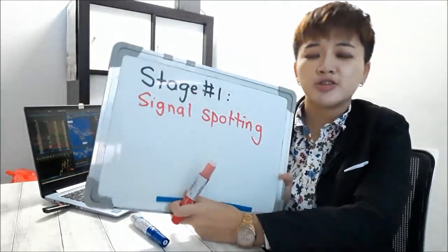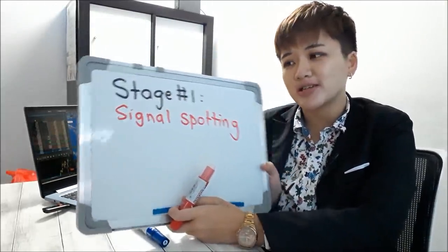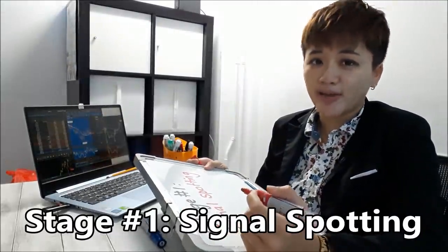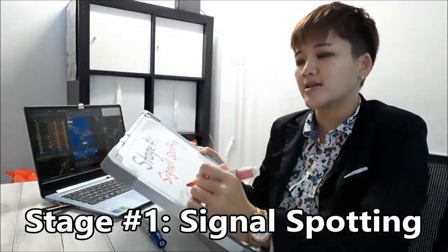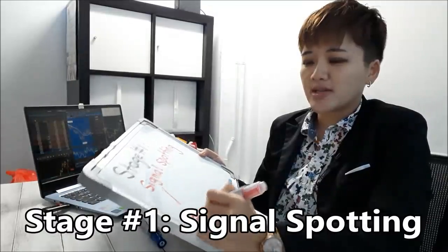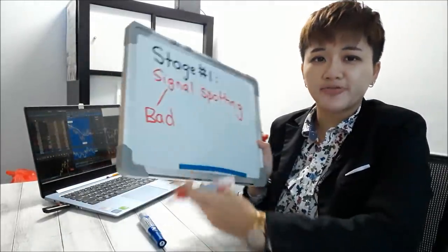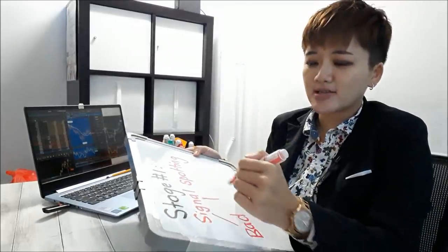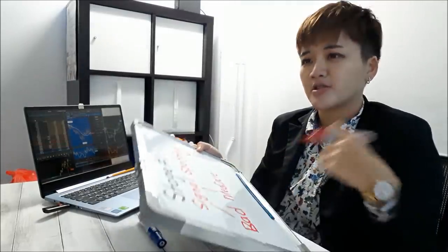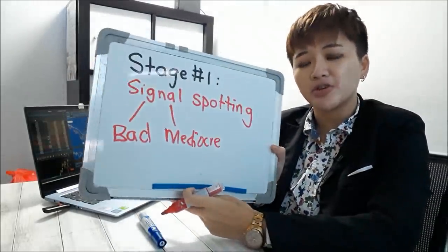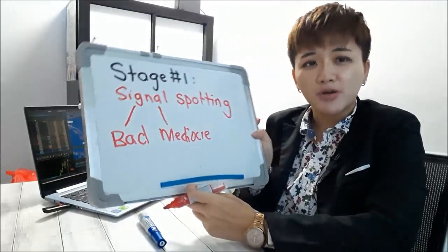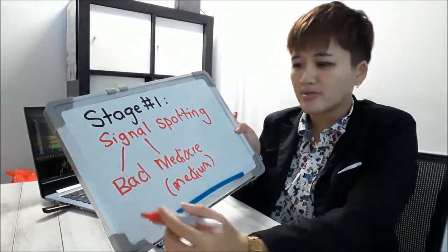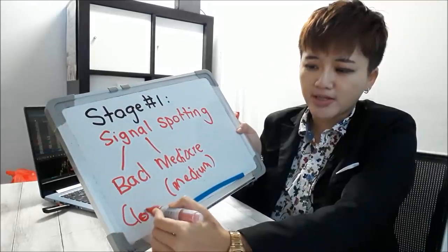So the first stage — you gotta learn how to properly spot signals. It doesn't mean that if you see a trade, it is time to trade. There are three main types of opportunities: the first one is a bad, lousy opportunity; then a mediocre, medium probability trade.